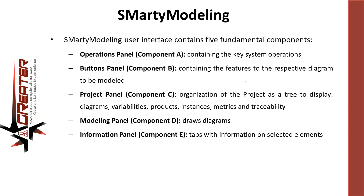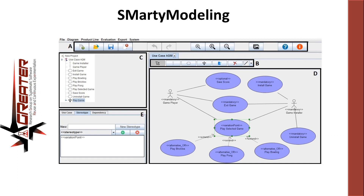Last but not least, we have the information panel, component E, in the bottom left part, where we can visualize properties of specific diagram elements. For example, in this diagram we have selected the 'play selected game' use case, which has a stereotype of variation point. This stereotype is shown in the information panel, and we can include new stereotypes for each of these elements.